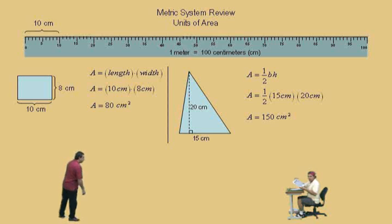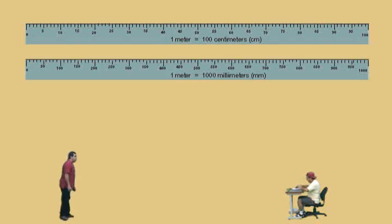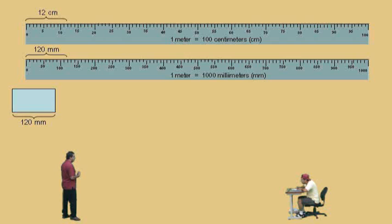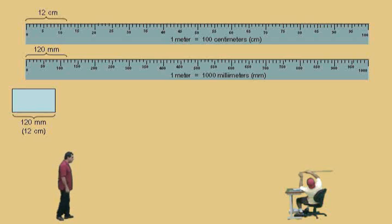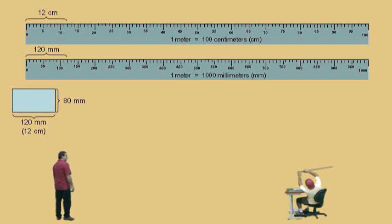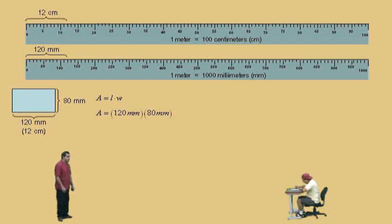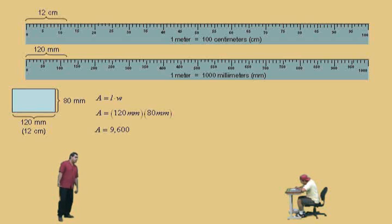Now let's do another area problem, but let's do this one in millimeters. Here's a rectangular box with a length of one-hundred-twenty millimeters — that's the same as twelve centimeters. For its width, we'll list that as 80 millimeters. Area is length times width: 120 millimeters times 80 millimeters gives us 9,600 millimeters squared. Or square millimeters, however you want to say that.